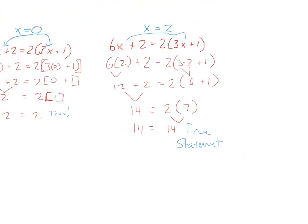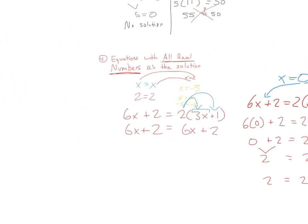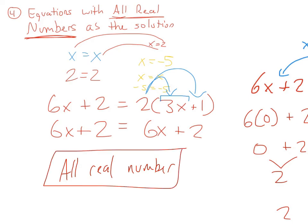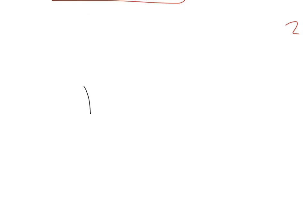When you get a true statement, it means any number you plug in for x gives a true statement. So the solution is not x equals 2 or x equals 0 — it's all real numbers. Instead of trying to list all real numbers, which would be impossible and take forever, we simply say all real numbers. Alright, that's all I have for you. I look forward to seeing you in class.